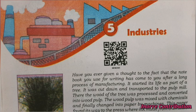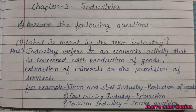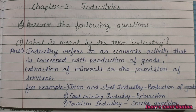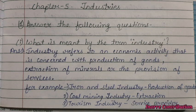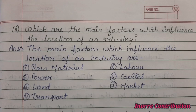Class 8 Social Science Geography, Chapter 5: Industries. Answer the following questions. First: What is meant by the term industry? Industry refers to an economic activity that is concerned with production of goods, extraction of minerals, or the provision of services. For example: iron and steel industry (production of goods), coal mining industry (extraction), and tourism industry (service provider).